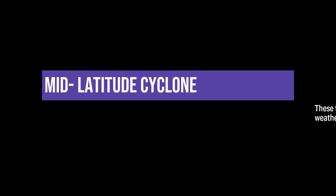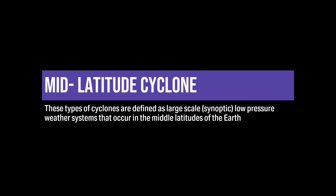Mid-latitude cyclones are defined as large-scale, synoptic, low pressure weather systems that occur in the middle latitudes of the Earth, typically occurring in the spring and fall. These weather systems bring severe weather and sudden temperature changes. To understand them fully, we need to review global atmospheric circulation.